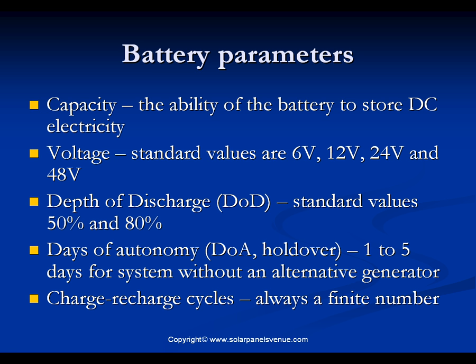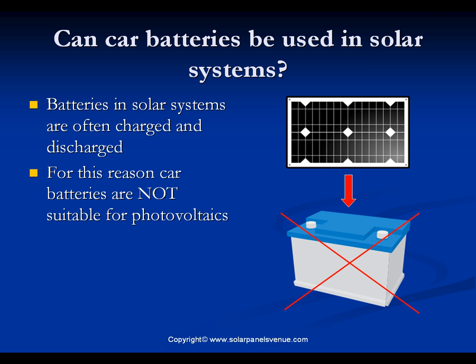Days of autonomy, or holdover, is the number of days a battery can support a load without being recharged by the solar array. The more the days of autonomy, the more expensive the battery. Days of autonomy depend on whether the solar system will use a generator or not. The typical value is two to three days for non-essential use and five to seven days for critical loads with no other alternative power source.